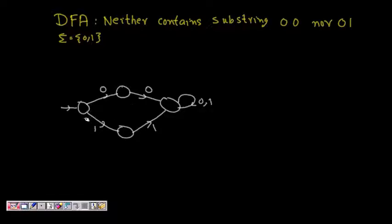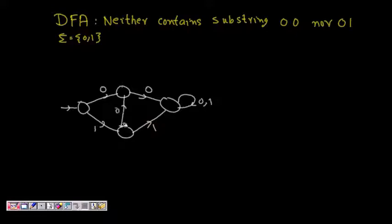What happens is: if I get 1 then 0, that is fine. But if I get a 0, I go to a state and with two zeros again I reach the dead state. So 0 again is a problem. This state already has 11, this state already has 10, and if you get two zeros, you are gone.